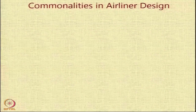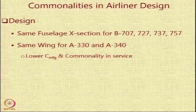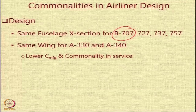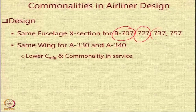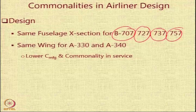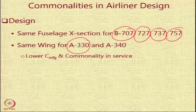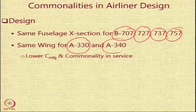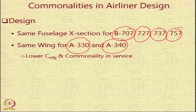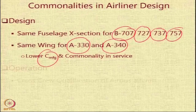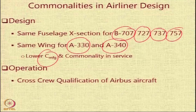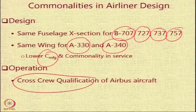There are also commonalities in airliner design. In the Boeing stable, the Boeing 707 fuselage cross section continues to be used in further aircraft with minimal change. In the case of Airbus, the twin-engine A330 and four-engine A340 share almost the same identical wing. This leads to lower manufacturing costs and commonality in service.